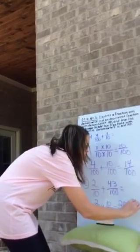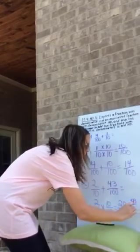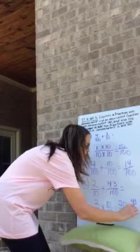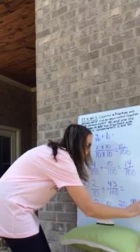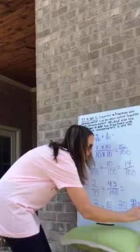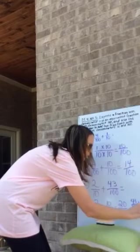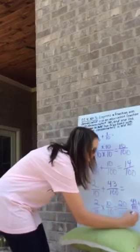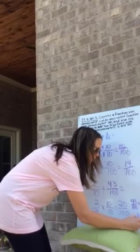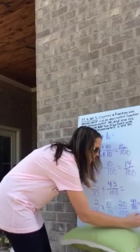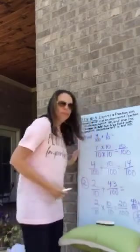So now we can say forty-three hundredths plus twenty hundredths equals sixty-three hundredths. That is our answer.